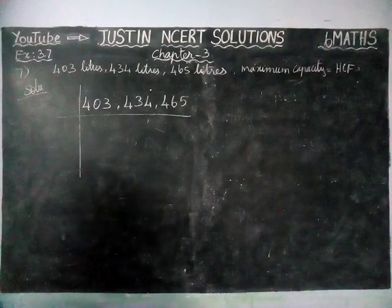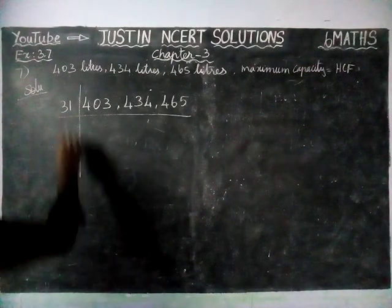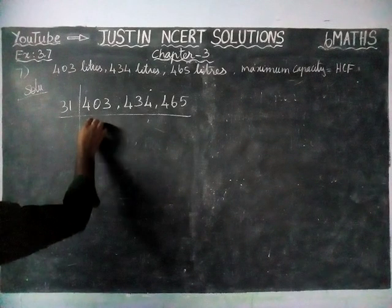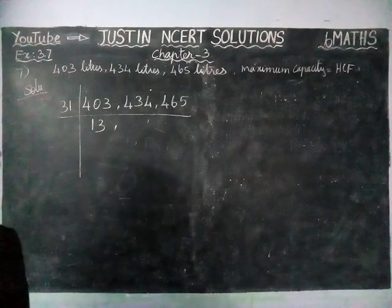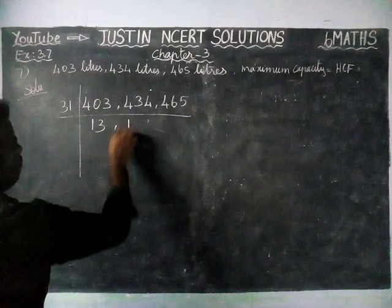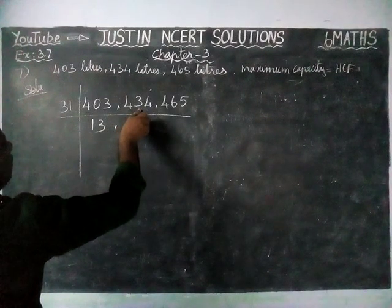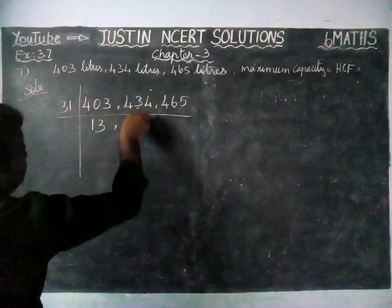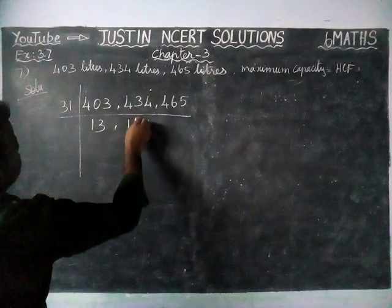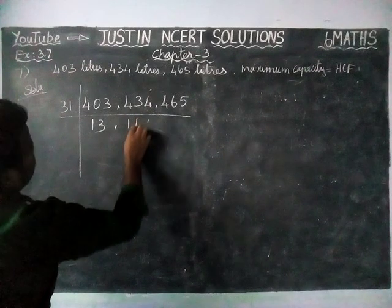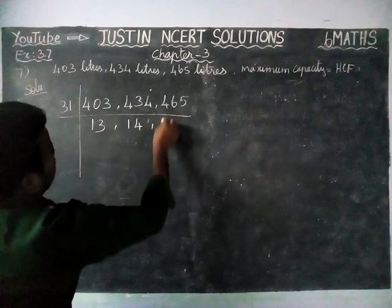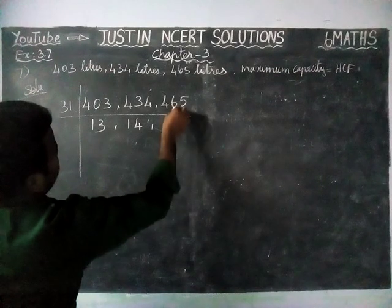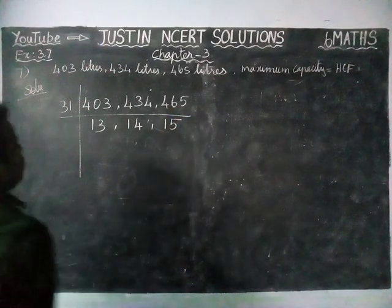The common divisor is 31. Dividing 403 by 31: 31 goes into 40 once with remainder 9, and 31 × 13 = 93, so 403 ÷ 31 = 13. Dividing 434 by 31: 31 × 14 = 124, so 434 ÷ 31 = 14. Dividing 465 by 31: 31 goes into 46 once with remainder 15, and 31 × 5 = 155, so 465 ÷ 31 = 15.